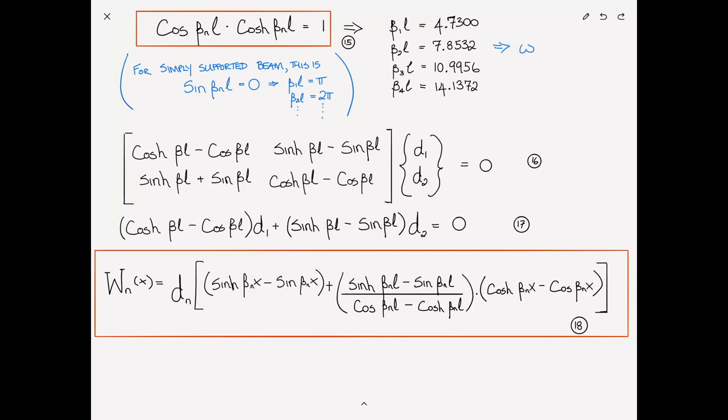And again, just to compare this to the case of the simply supported beam. In the case of the simply supported beam, the mode shape was a much more simple function. Wₙ(x) = cₙ sin(βₙx). So I went through this really quickly. And this was by design because I didn't want you to get too lost in the math. I wanted you to follow the flow of what's going on.